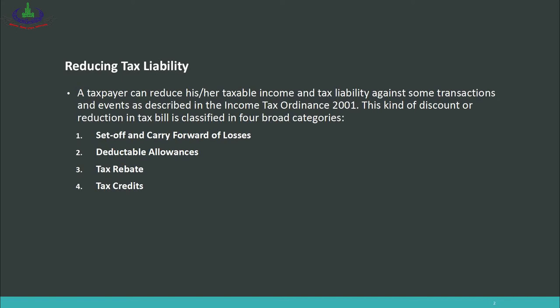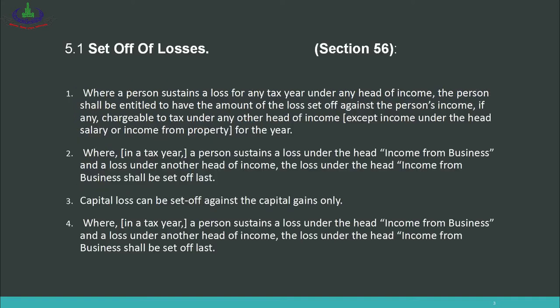The fourth category is tax credits, which includes certain transactions on the basis of which your tax liability can be reduced. We will now study all four categories in detail. We begin with set-off of losses under Section 56.